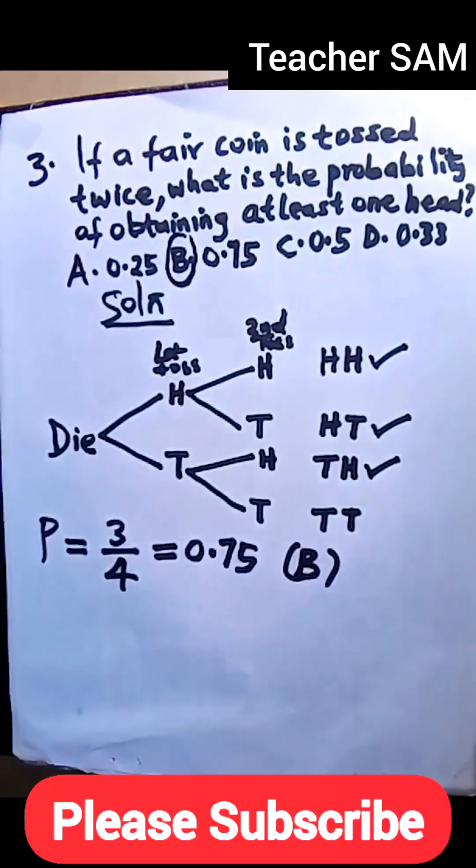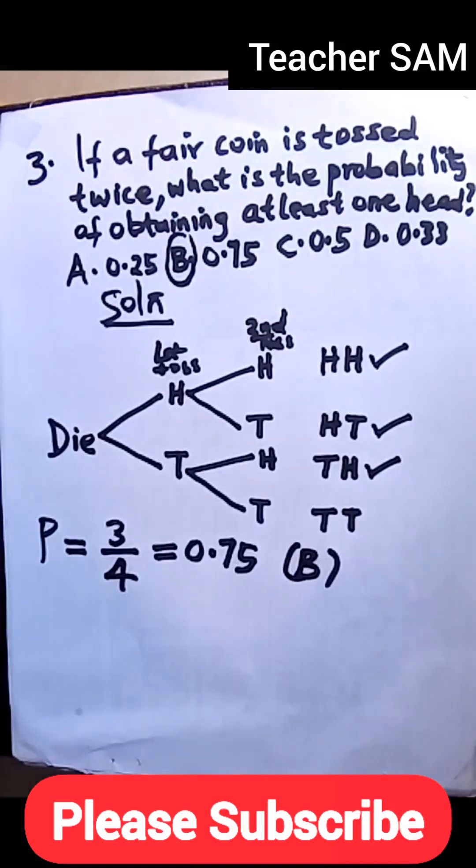Option B is our answer, so that satisfies that aspect. You can as well study this more. Go to the topic probability, look at tossing a die, maybe one die tossing once or twice, you know, or sometimes three times, depending on whichever way.